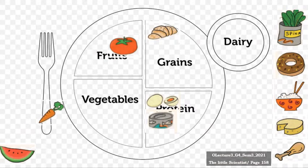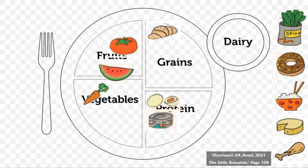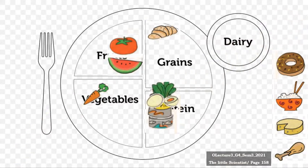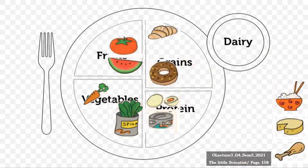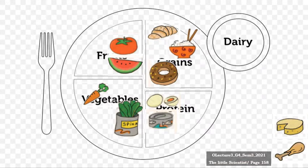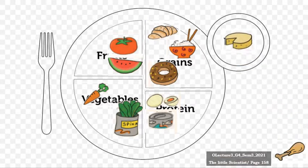The carrot is a vegetable. The watermelon is a fruit. The spinach is a vegetable. Fruits and vegetables provide you with vitamins and minerals. Donuts are rich in simple and complex carbohydrates, so they belong to the grains group. The rice is also rich in starches or complex carbohydrates. The cheese belongs to the dairy group.